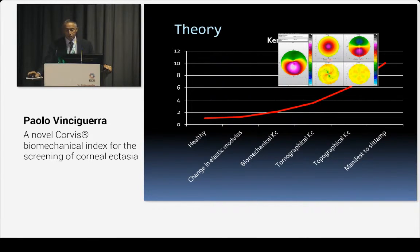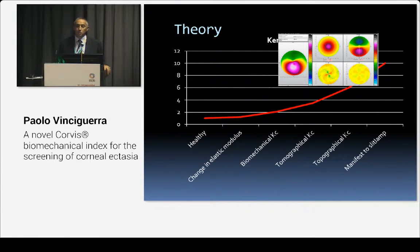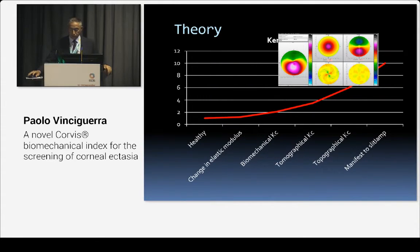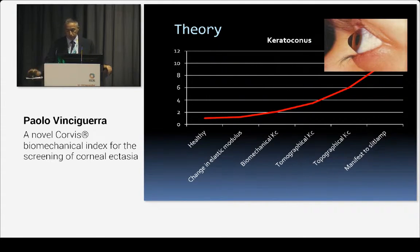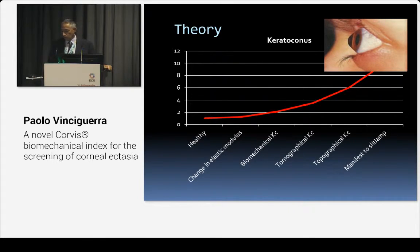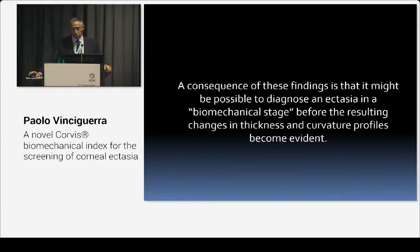Only much later can you start to see something in the topography, because the epithelium compensates for curvature changes in the very early stages — so you cannot see curvature changes immediately. And finally, you can see changes at the slit lamp or even just by looking at your patient. The real issue is to be able to detect those conditions much earlier.